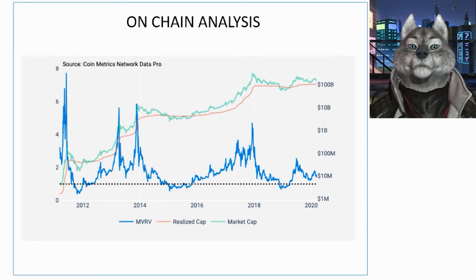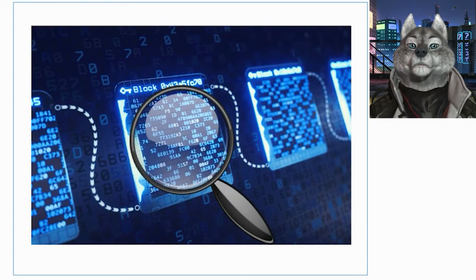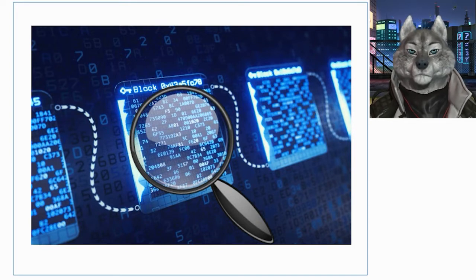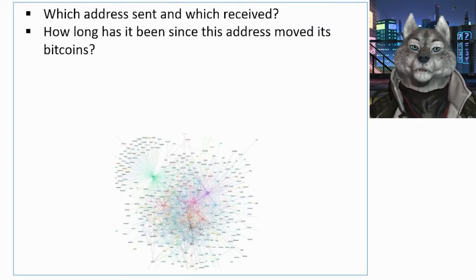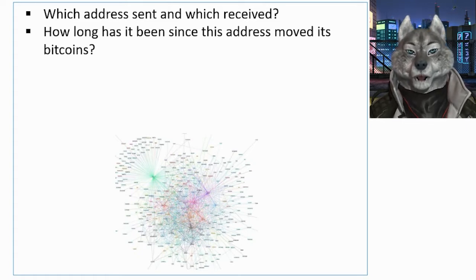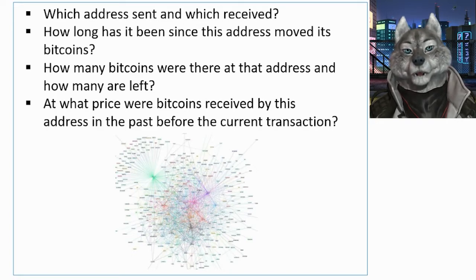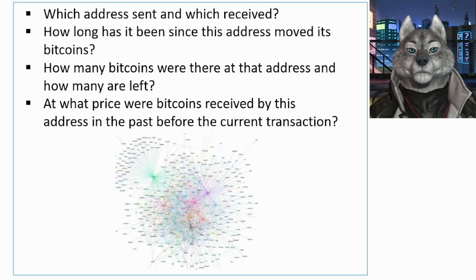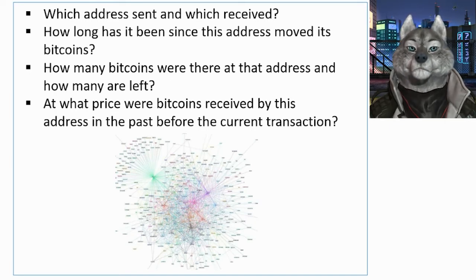Unlike chart analysis that only looks at the behavior of the Bitcoin price, on-chain analysis looks at what is happening under the hood. The Bitcoin blockchain is 100% auditable, so you can evaluate everything that is happening. Each Bitcoin transaction contains a lot of useful information such as: which address sent and which received, how long it has been since an address moved its Bitcoins, how many Bitcoins were there and how many are left, and at what price Bitcoins were received by that address in the past before the current transaction.